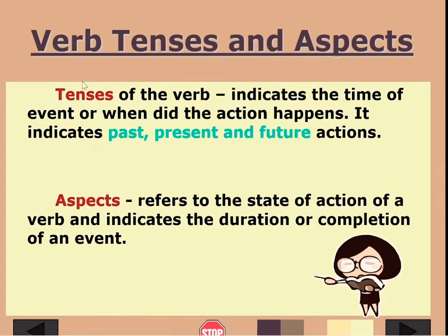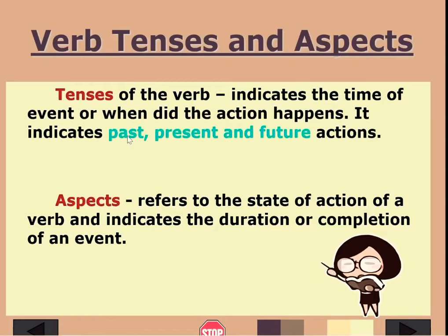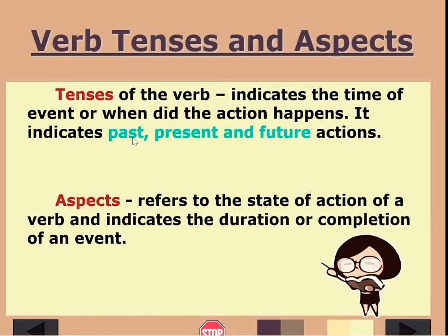Now let's talk about verb tenses and aspects. Tenses indicate the time of an event — when the action happened, is happening, or will happen: past, present, or future. Aspects refer to the state of action of a verb and indicate the duration or completion of an event. Aspects make the tenses more specific. We have 12 tenses or aspects of the verb.